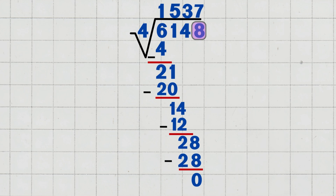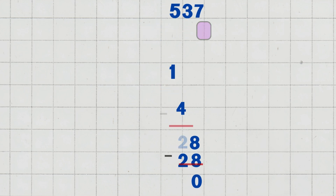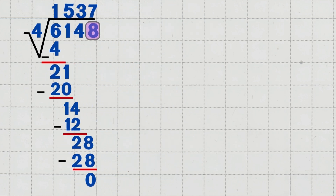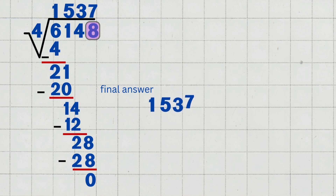Step six: write the final answer. The quotient is one thousand five hundred and thirty-seven. So, six thousand one hundred and forty-eight divided by four equals one thousand five hundred and thirty-seven exactly, with no remainder.